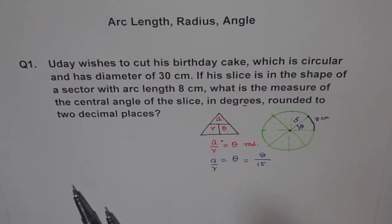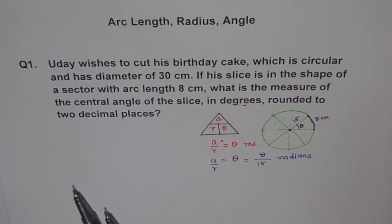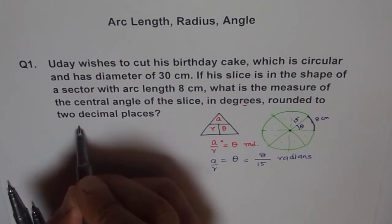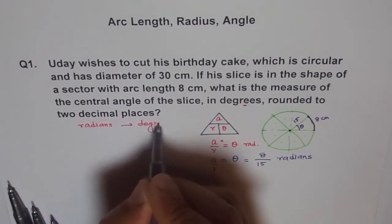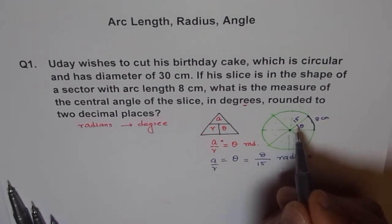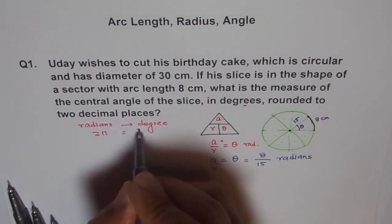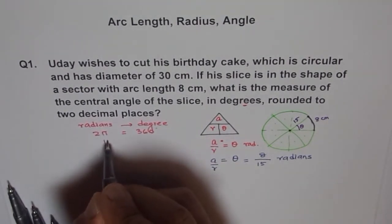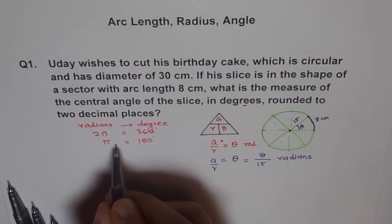But what is the unit for this? Theta is in radiance, not in degrees. Now, what we should do? We should convert radiance to degrees. How to convert radiance to degree? Do you remember? You know one full circle is 360 degrees and 2 pi radiance. So we have relation saying 2 pi radiance is equals to 360 degrees. That means pi radiance is equals to 180 degrees.